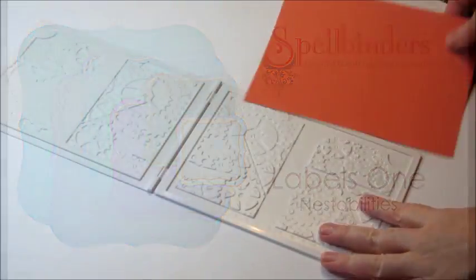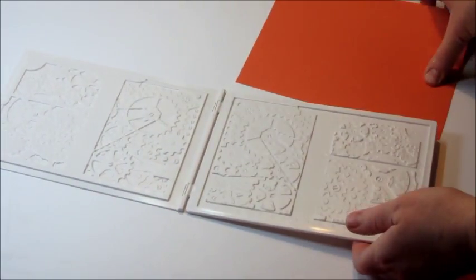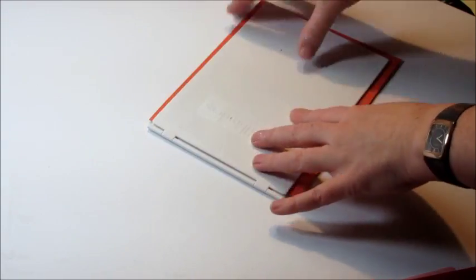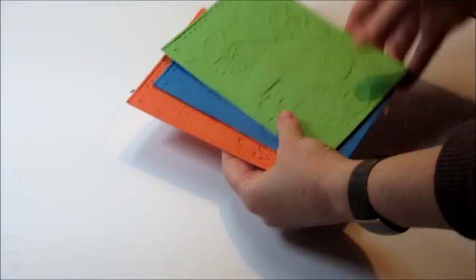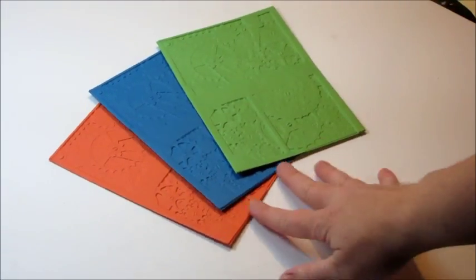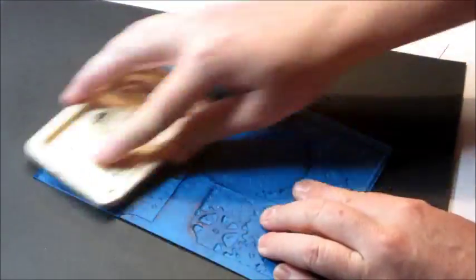Now to begin we're going to be using the 3D embossibilities folder as you see here and we're going to emboss three different colors of cardstock starting with orange, then we will emboss the same pattern using blue and then green. Here we'll end up with the three identical copies of the Creative Cogs.